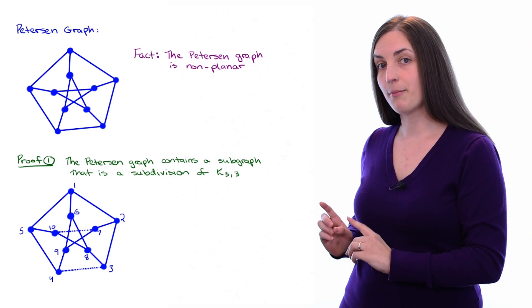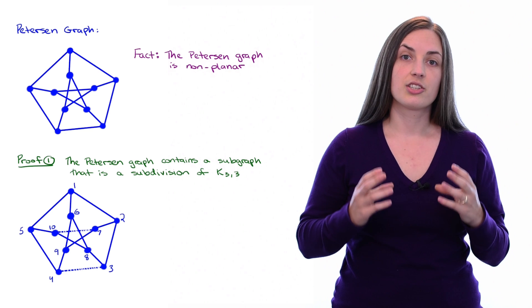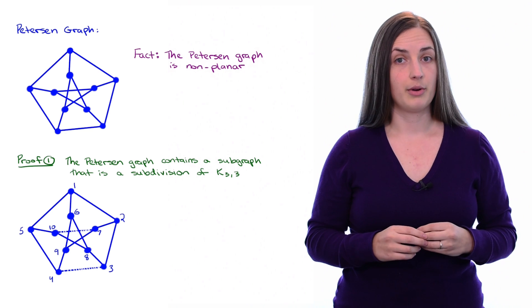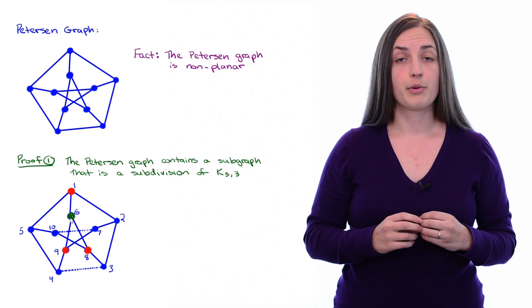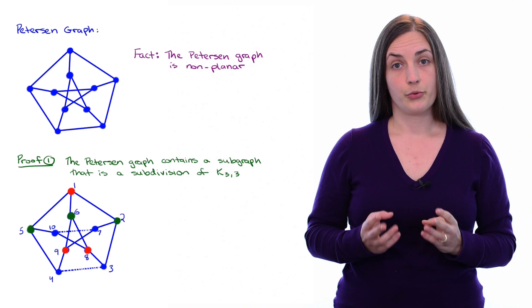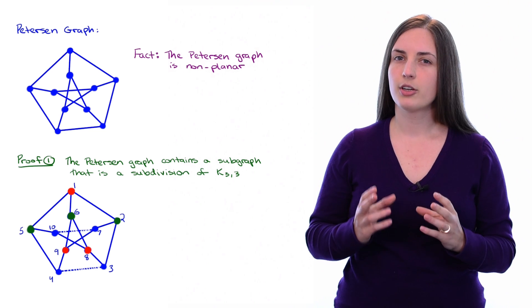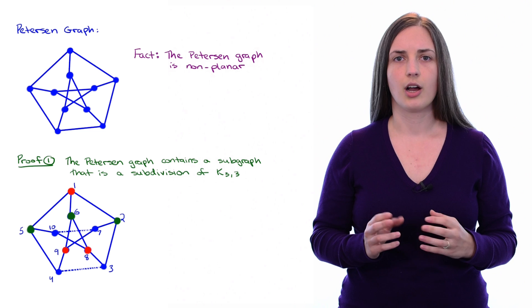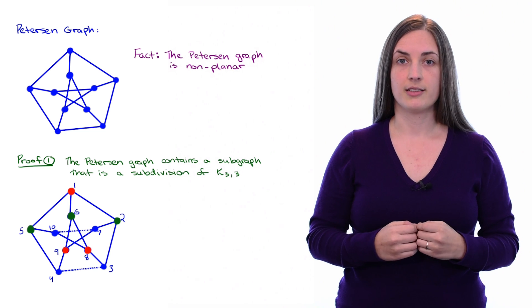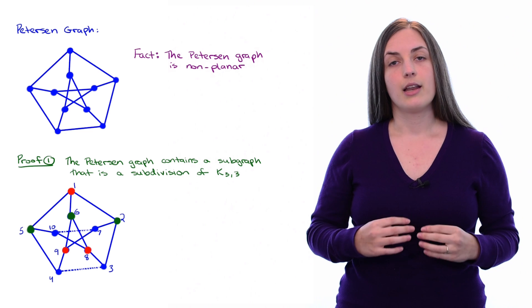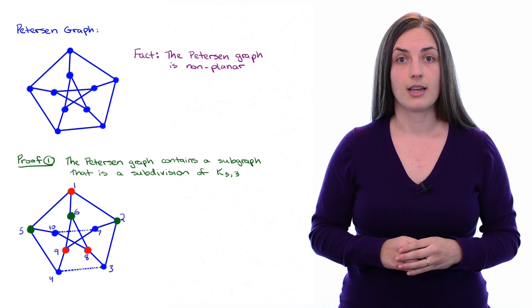Now looking at this subgraph, I'd like to start to search for the structure of K₃,₃. So I'm going to highlight three vertices in red and three vertices in green. The reason I've done this is because I'm looking for the overall structure of a complete bipartite graph with three vertices in one partite set, the red set, and three vertices in the other partite set, the green set.